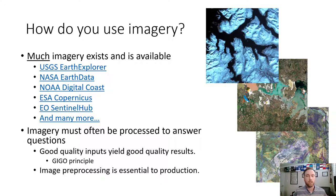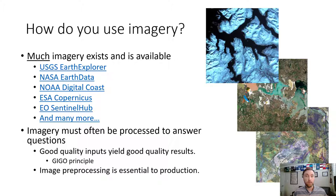Much imagery exists today and is available. If you open the PDF document of this week's lecture notes, each of these are hyperlinks: USGS Earth Explorer, NASA Earth Data, NOAA Digital Coast, ESA Copernicus, EO Sentinel Hub, and a list of about 20 other remotely sensed imagery data sources. Each is either a viewer where you can view data on screen or a data hub where you can download data and pull it into a GIS. Most require you to sign up — it's free, you just create an account.